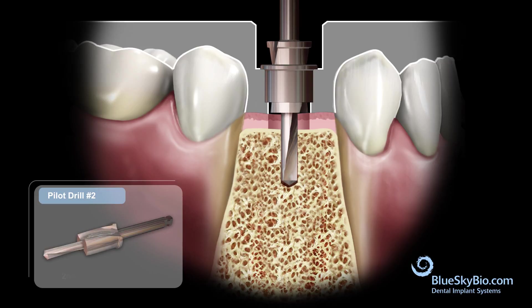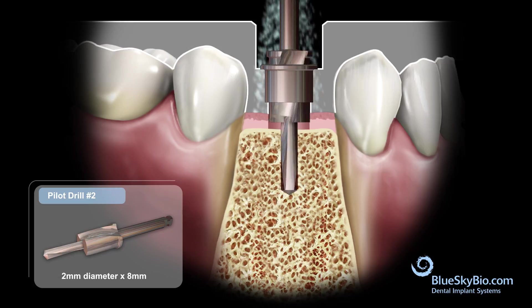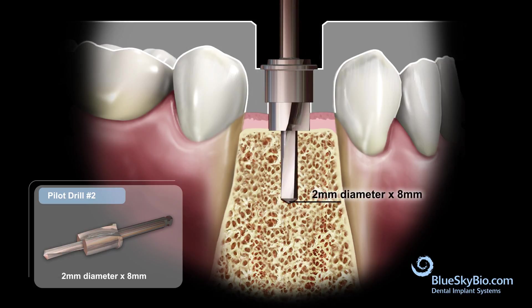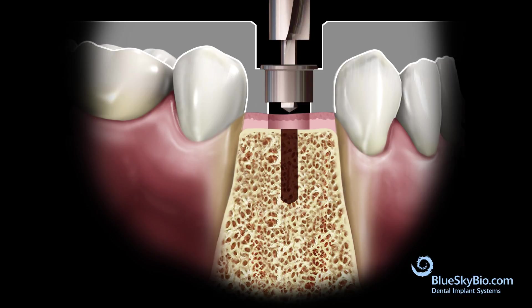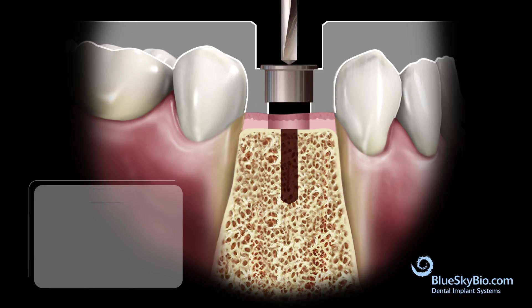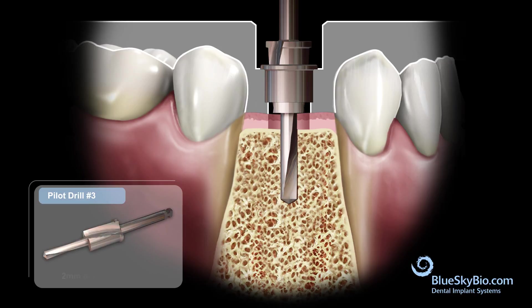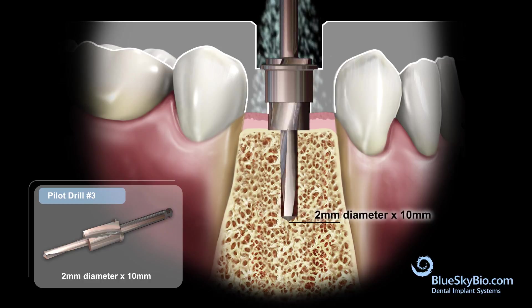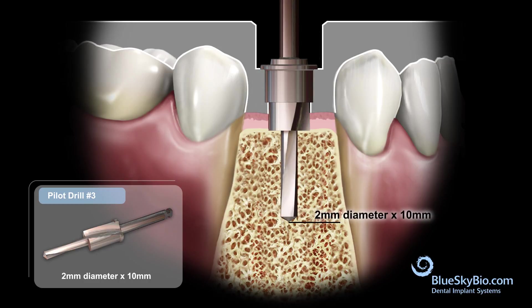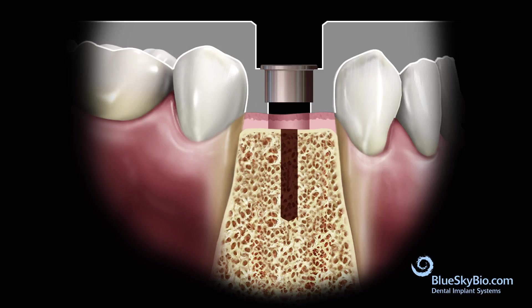Insert the 2 by 8 millimeter drill without spinning until it advances to the depth created by the previous drill. Activate the drill and advance until stopped by the master tube. Insert the 2 by 10 millimeter long drill without spinning until it reaches the depth of the osteotomy. Activate the drill and advance with irrigation until stopped by the master tube. The guided pilot hole is now completed.